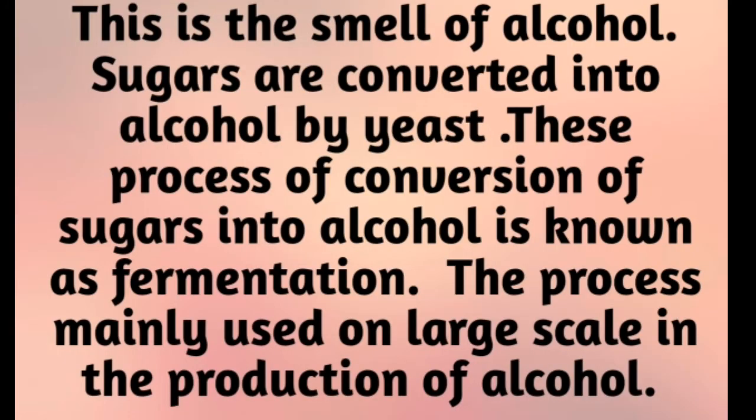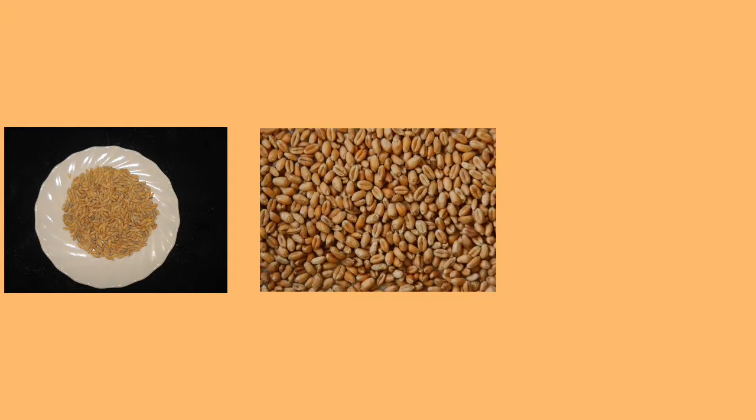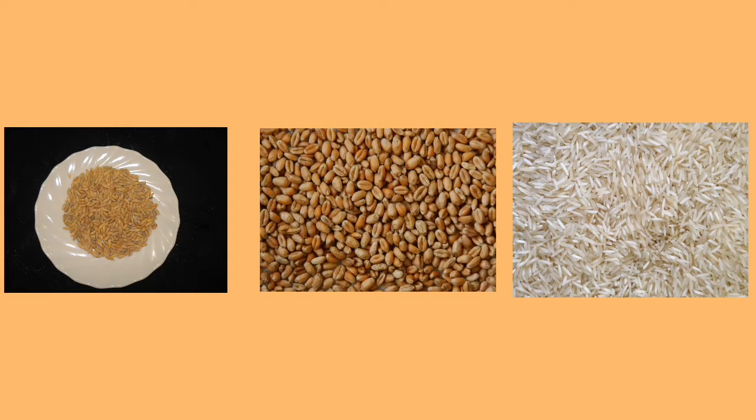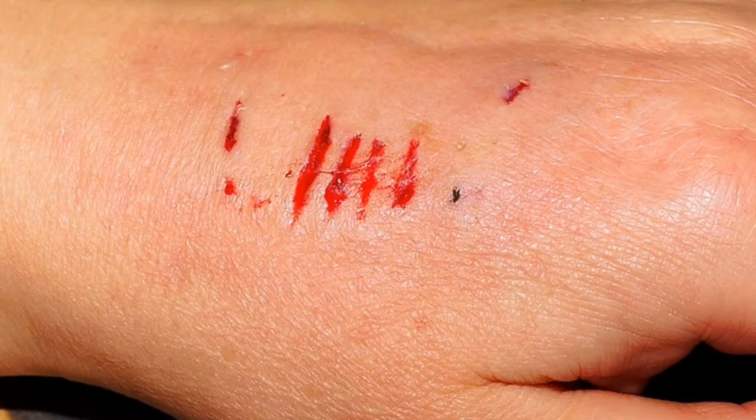If you take some water, sugar, and yeast, mix it well and leave it for 3 to 4 hours, then open the lid and smell it — that is the smell of alcohol. Sugars are converted into alcohol by yeast. This process of conversion of sugar into alcohol is known as fermentation, and it is mainly used on large scales in the production of alcohol. Yeast is also present in grains like barley, wheat, and rice.